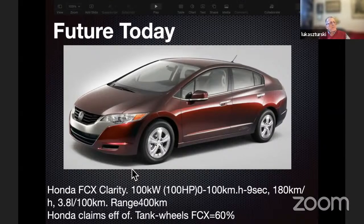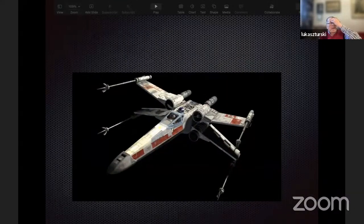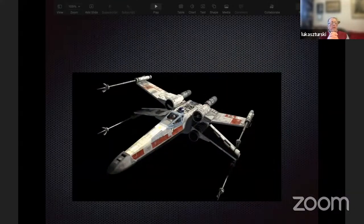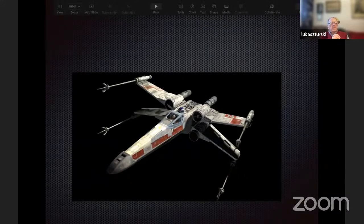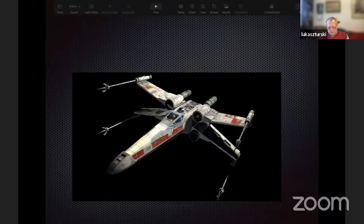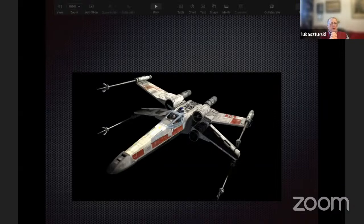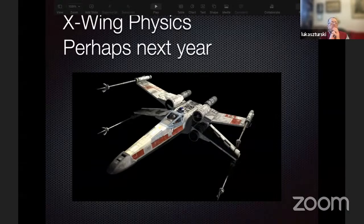There is a clever construction which allows, if the hydrogen all of a sudden leaks from one of those bottles, then it goes over special vents which are over the back window in the car and escapes. Honda claims that the efficiency tank to wheels for that car is about 60%.